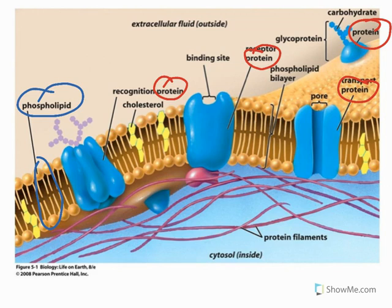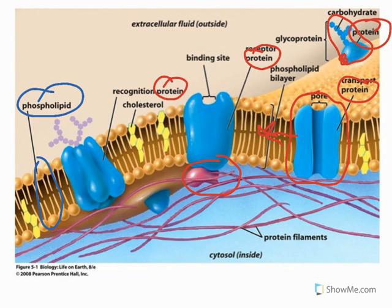Some of the proteins just kind of sit on top of the membrane, like this guy here. Other ones go through the membrane, such as the pore protein there — the transport protein. Most of the proteins are able to move around the membrane fairly rapidly and change position, though some are anchored in place by the cytoskeleton.